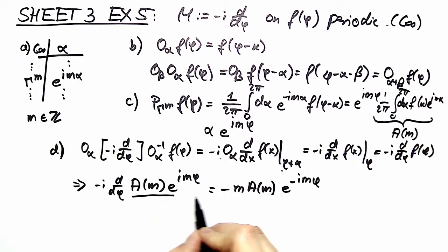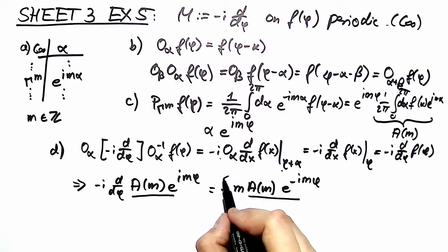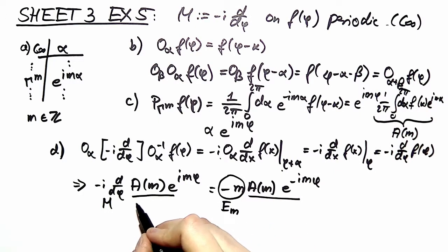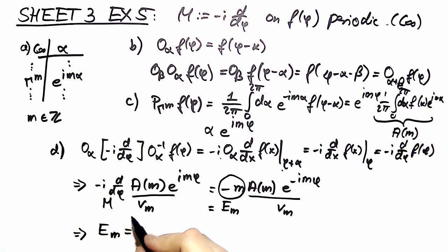This is our eigenvector. This is our eigenvalue and this is our operator m. Em times v of m times v of m. So our energies are described, are labeled by the representation and are minus, these are minus m. m, I will remind you again, is in the whole numbers.